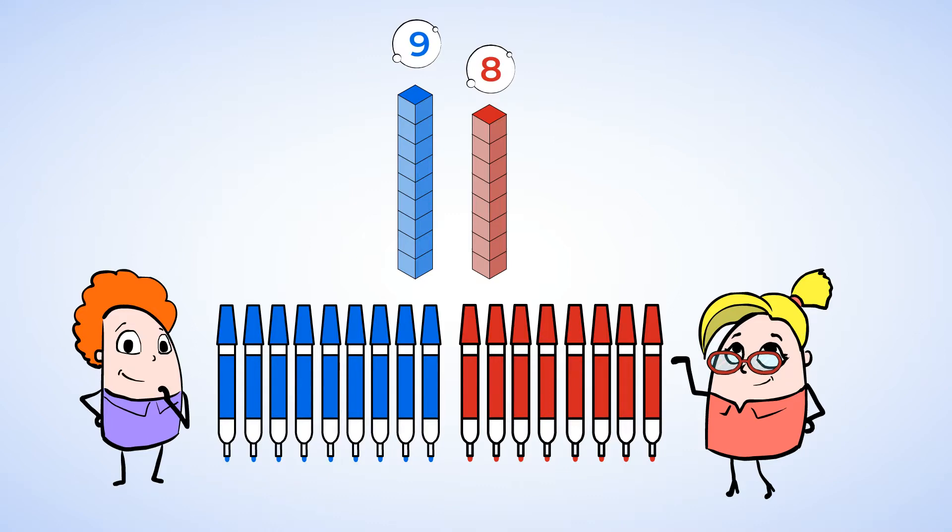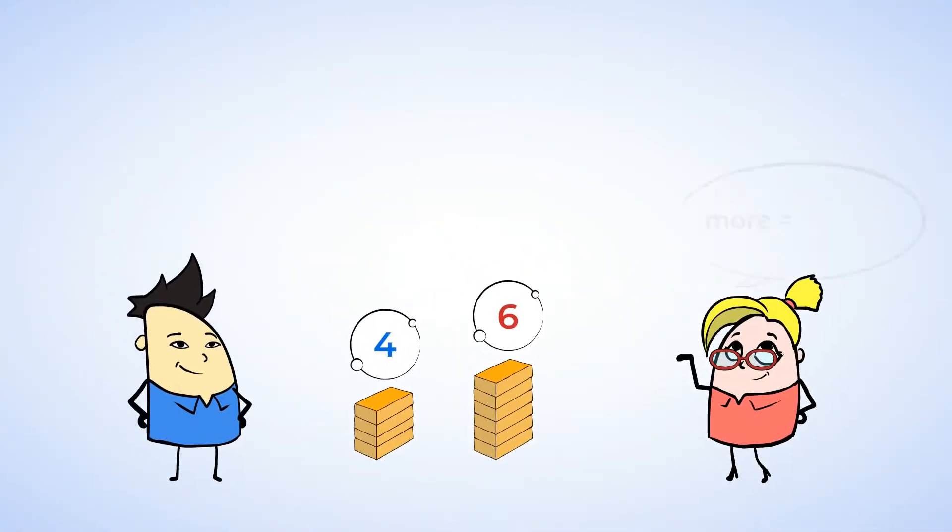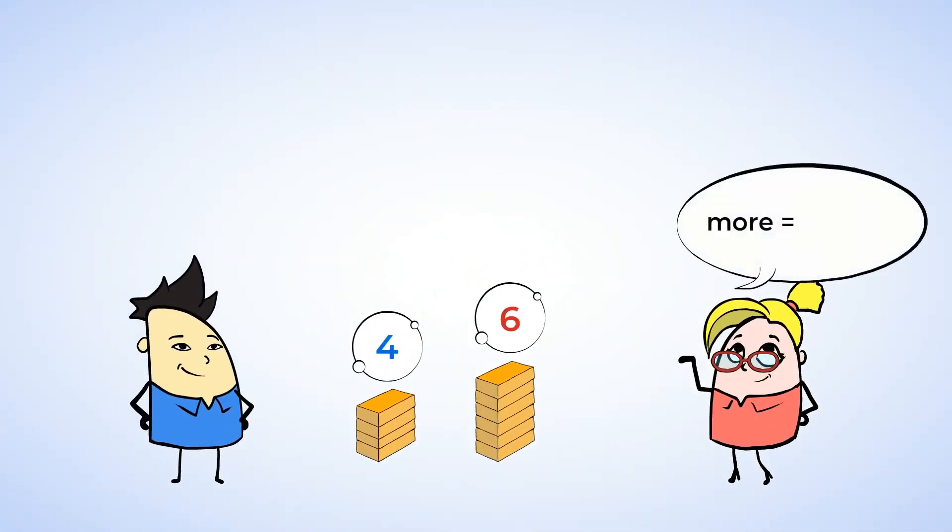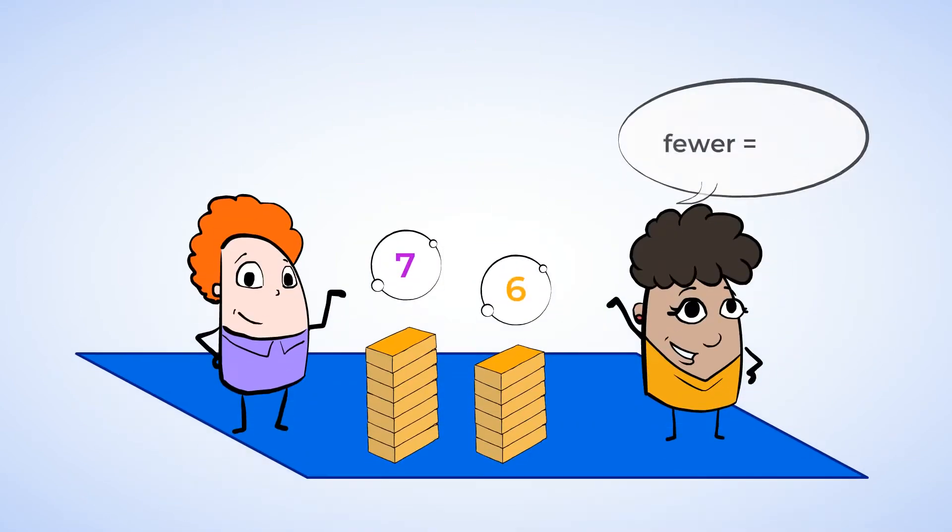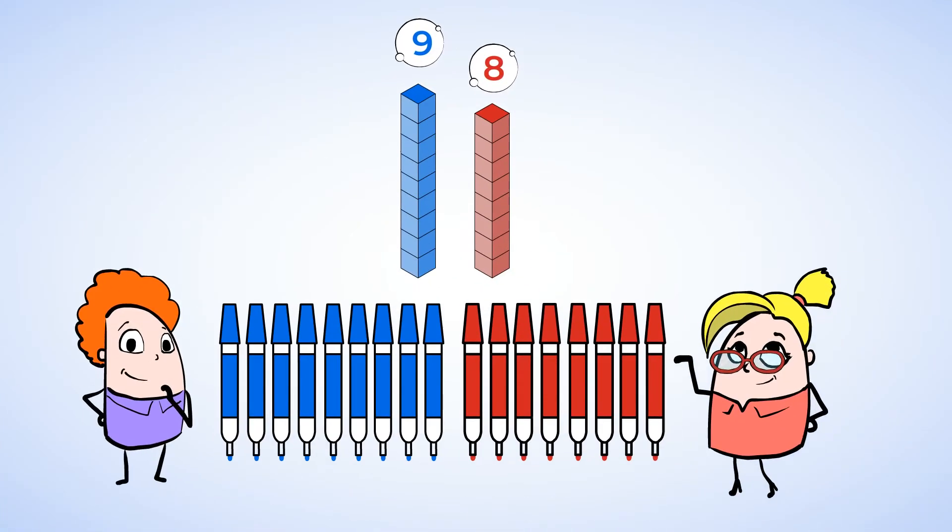We did amazing work comparing different groups of objects. Don't you think? We learned that more than and greater than means bigger. And we also learned that fewer and less than means smaller. We compared by looking at bigger and smaller towers, like towers of blocks. We even used cubes to represent objects that weren't easy to line up.